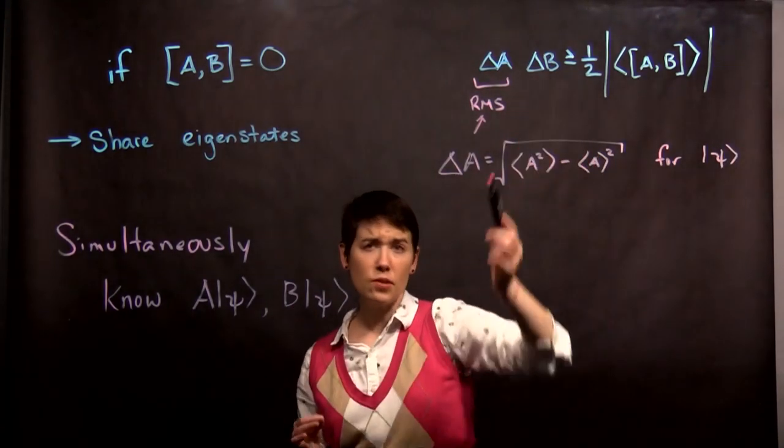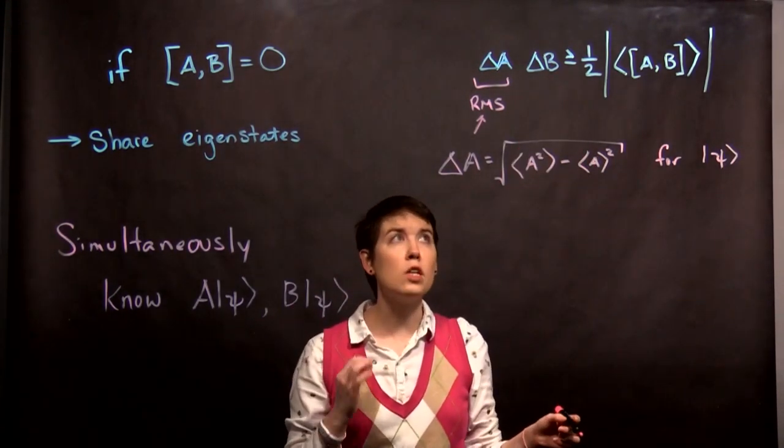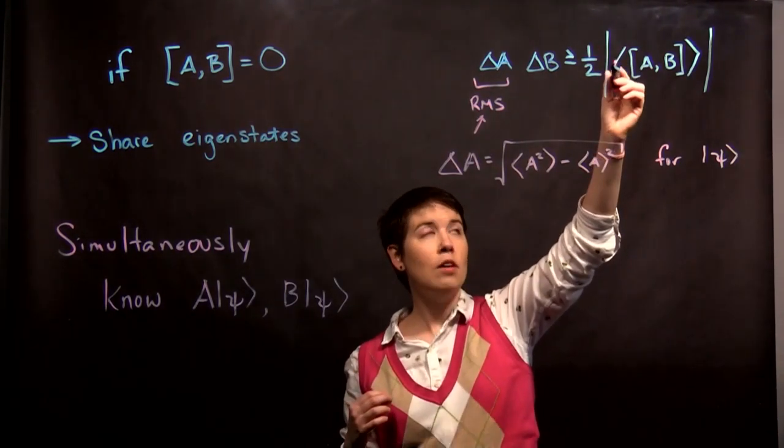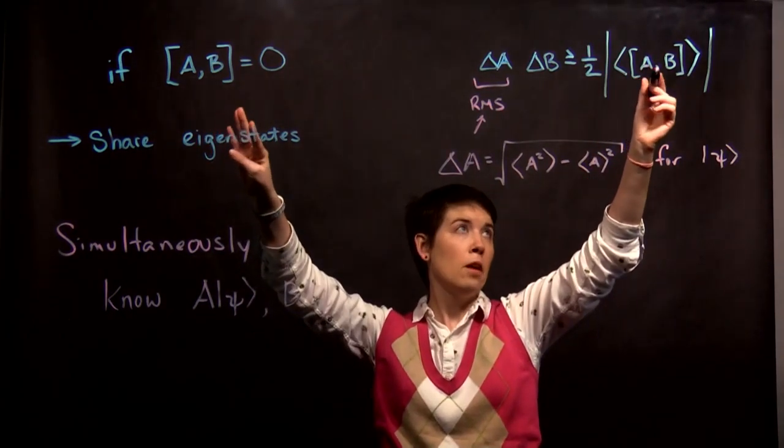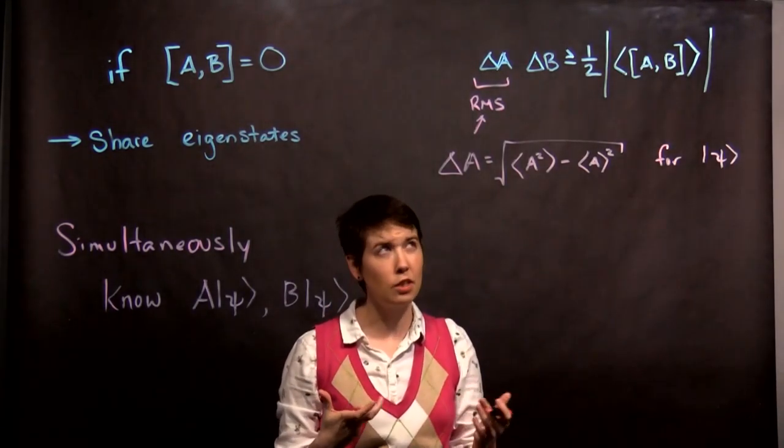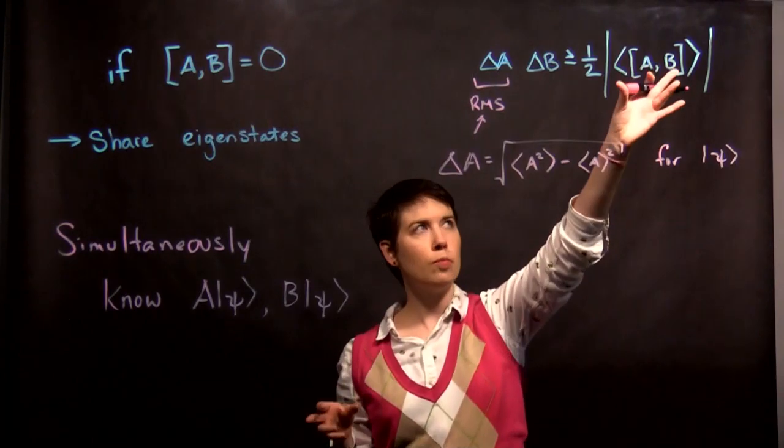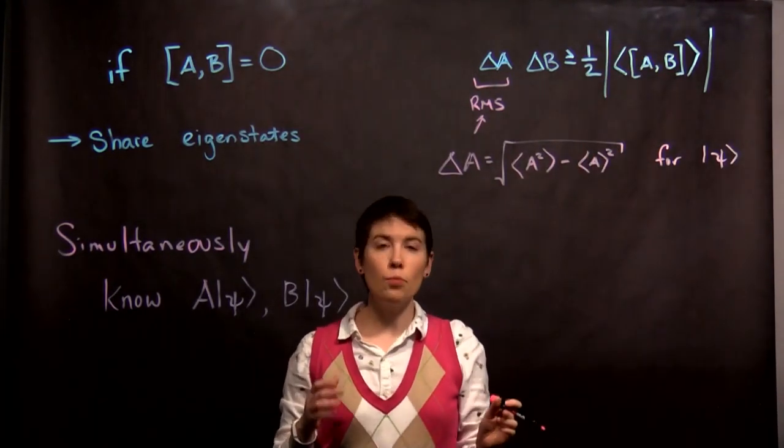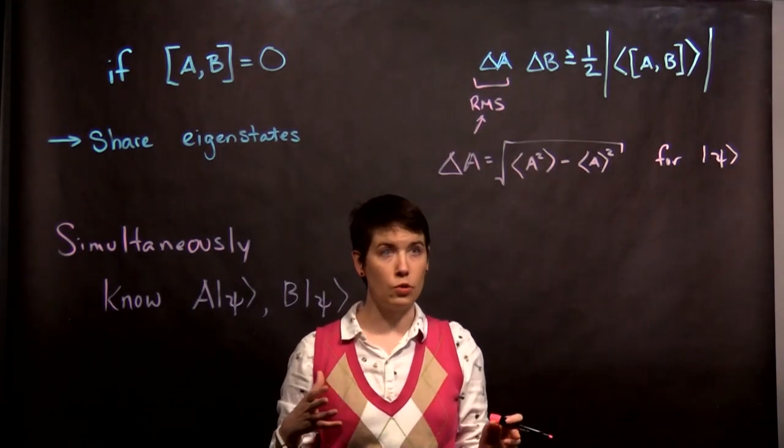Now, this is going to be greater than or equal to the expectation value of the commutator. Magnitude, because you could actually get a complex number here. And then there's this factor of one half. Now, it's important to note that this is greater than or equal to.